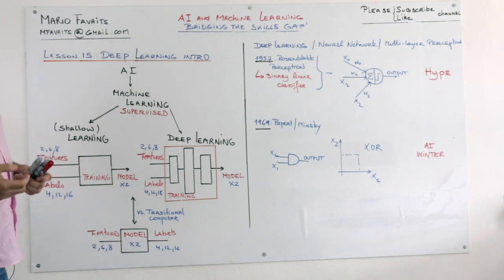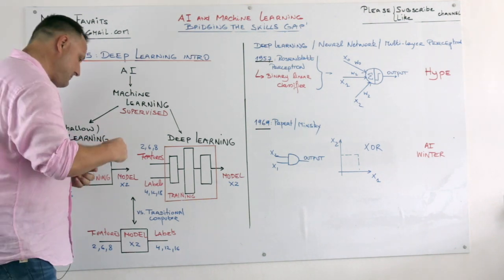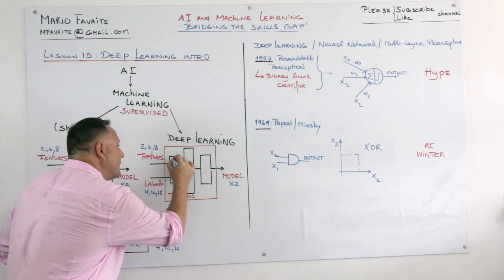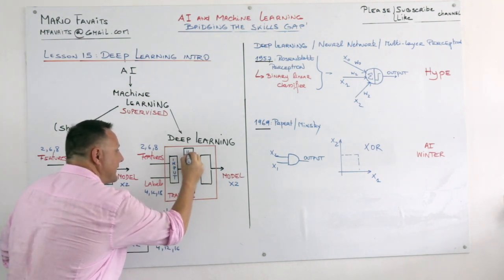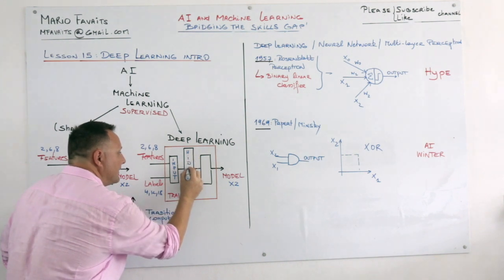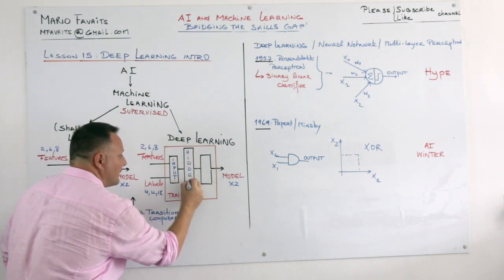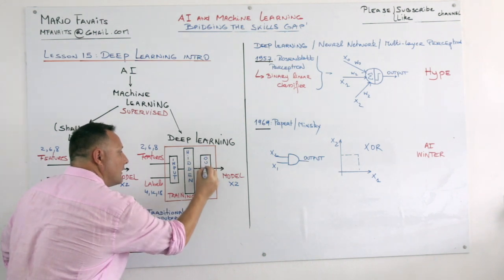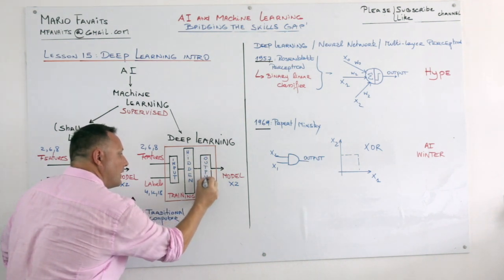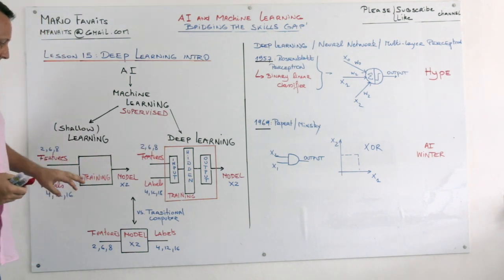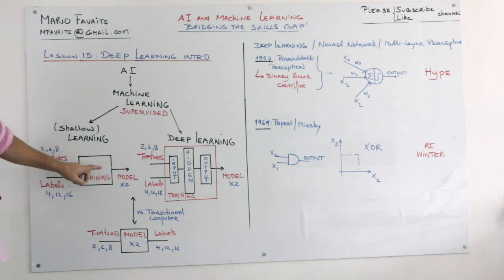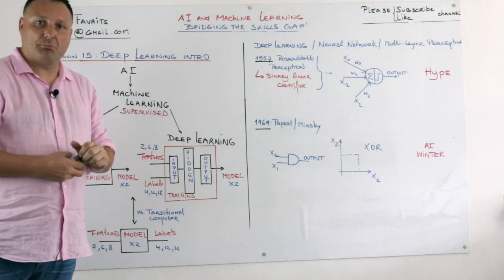But instead of doing one step between feature labels and model, you do many steps. And that's why it's called deep learning. So you have an input layer, you have what we call a hidden layer, and you have an output layer. So more about this later. But I want you to grasp what the difference is between shallow and deep learning. So it's very simple: a one-step approach versus a multi-step approach.